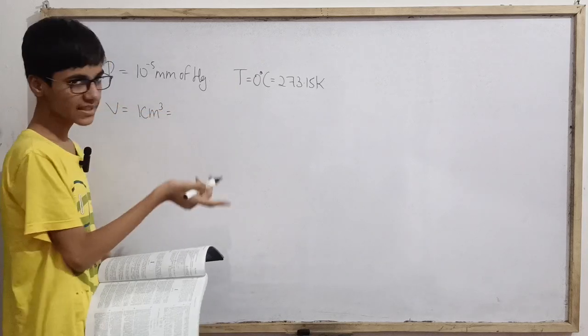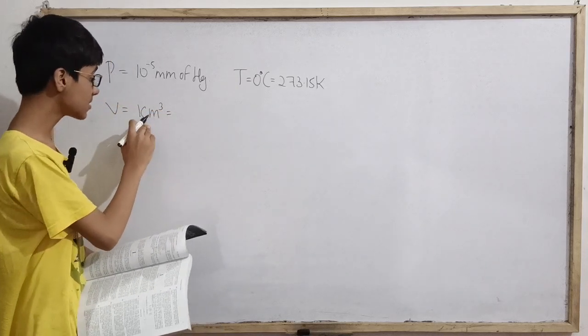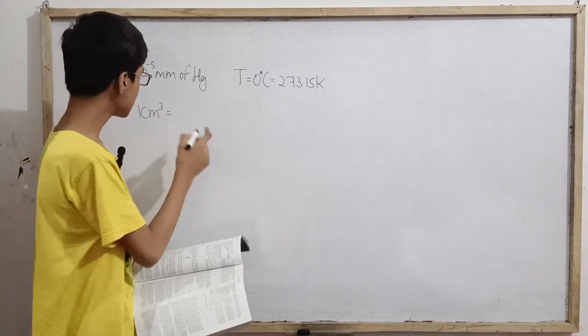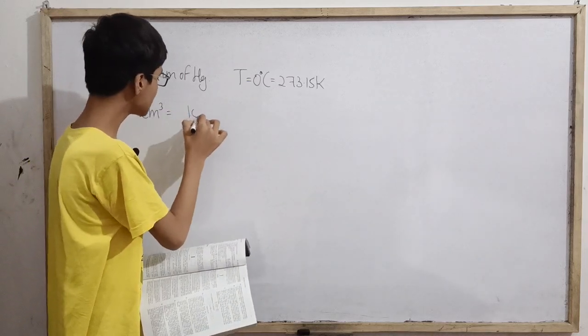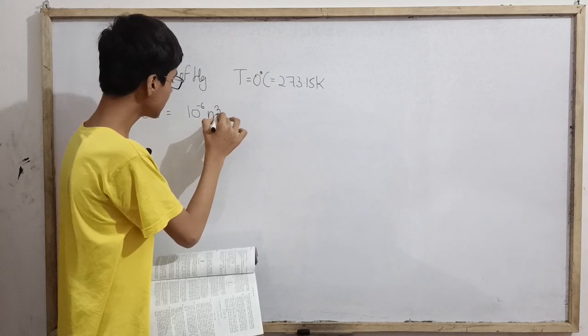We know that 1 meter is 10 to the power 2 centimeters, so 1 centimeter is 10 to the power minus 2 meters. So 1 cubic centimeter is 10 to the power minus 6 cubic meter.